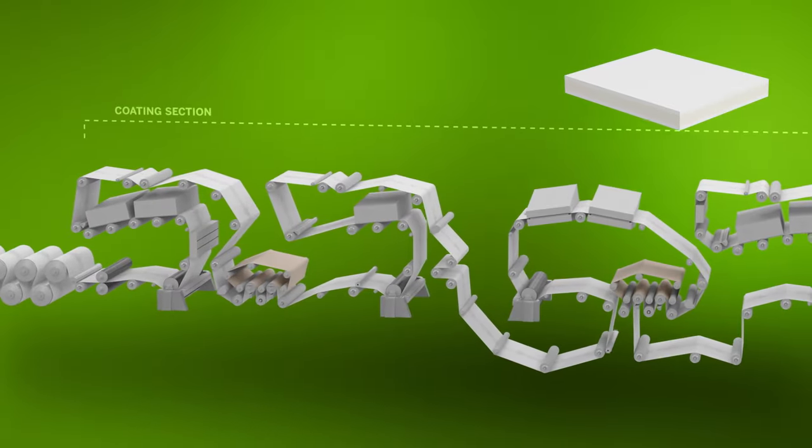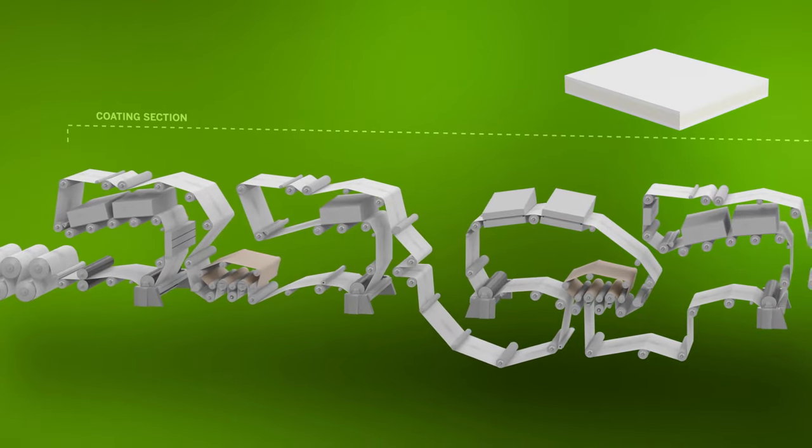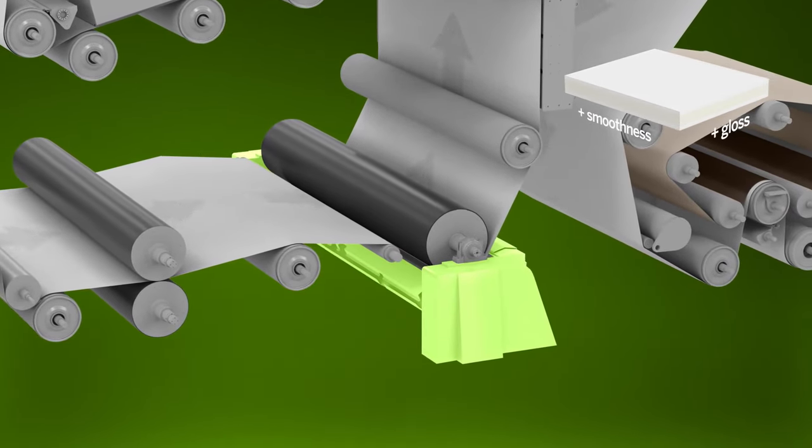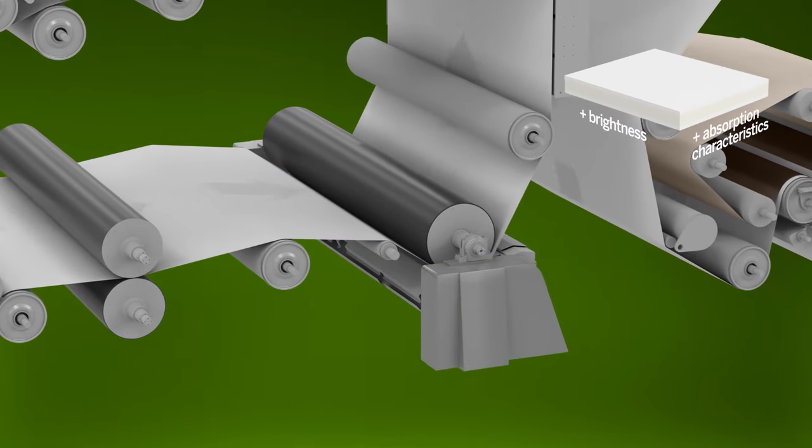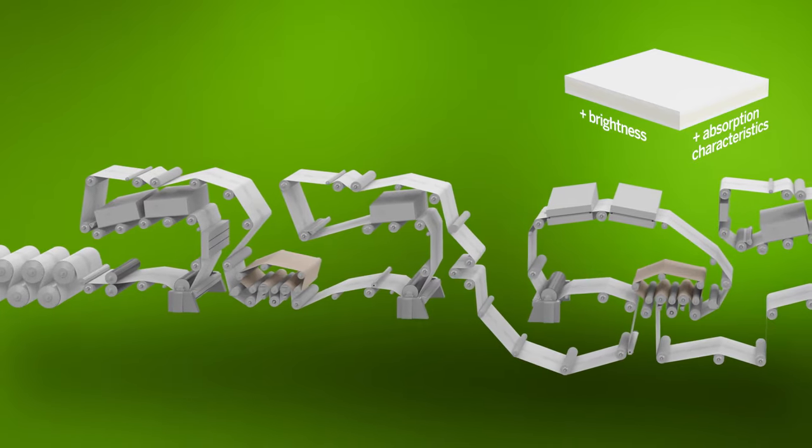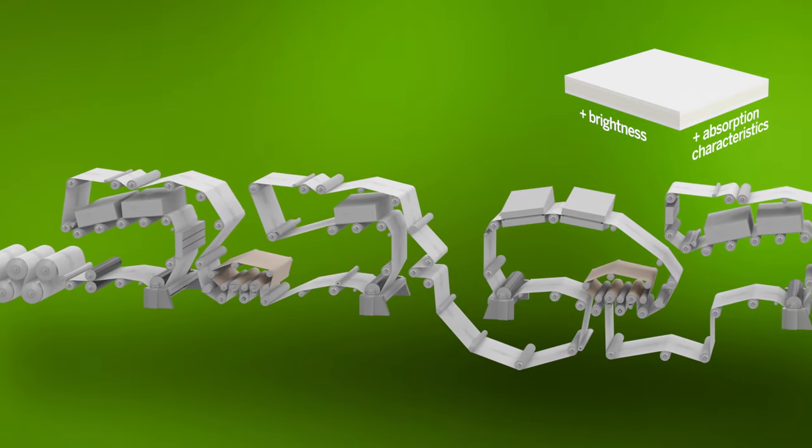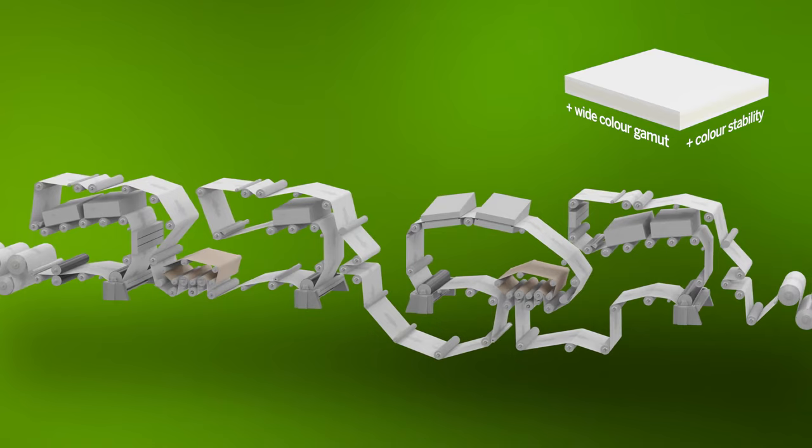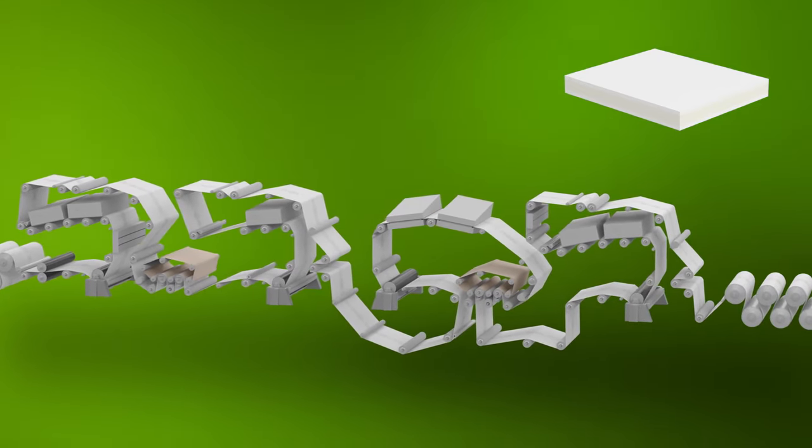In the coating section, a mixture of white pigments and binders is applied to the web and smoothed out with a coating blade. A high-quality coating is a prerequisite for good printing results. The top surface of the board may be coated two or three times, while the reverse is either left uncoated or only coated once.